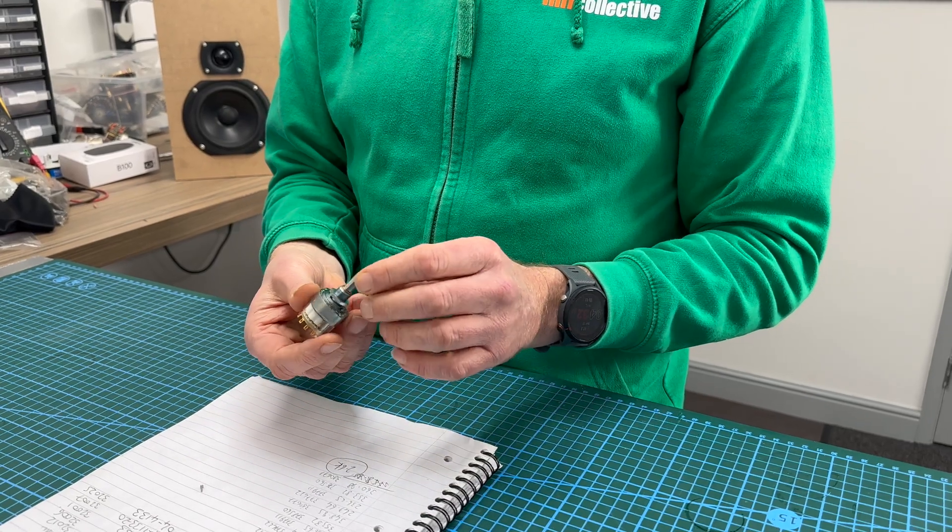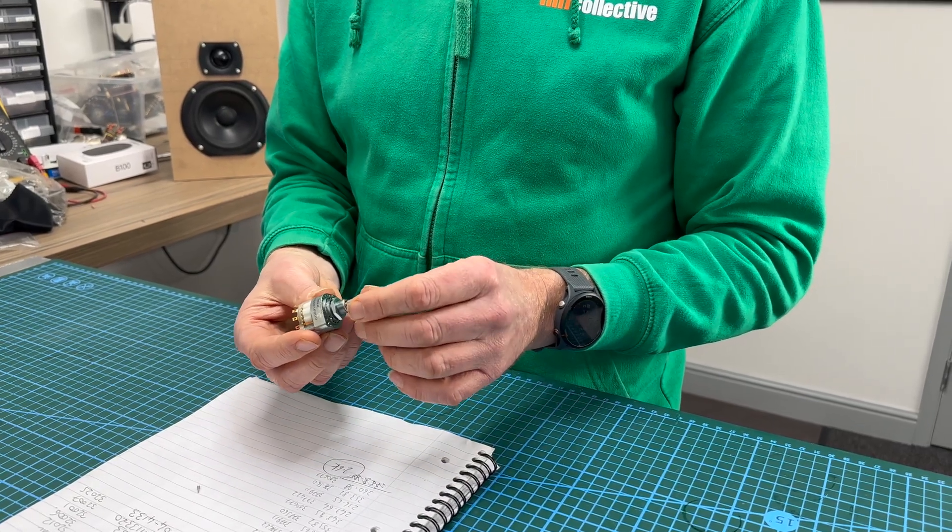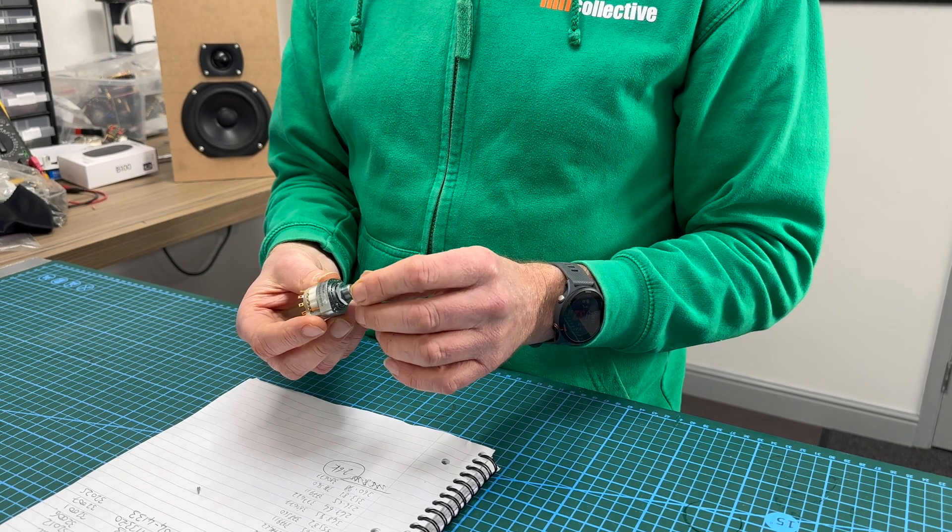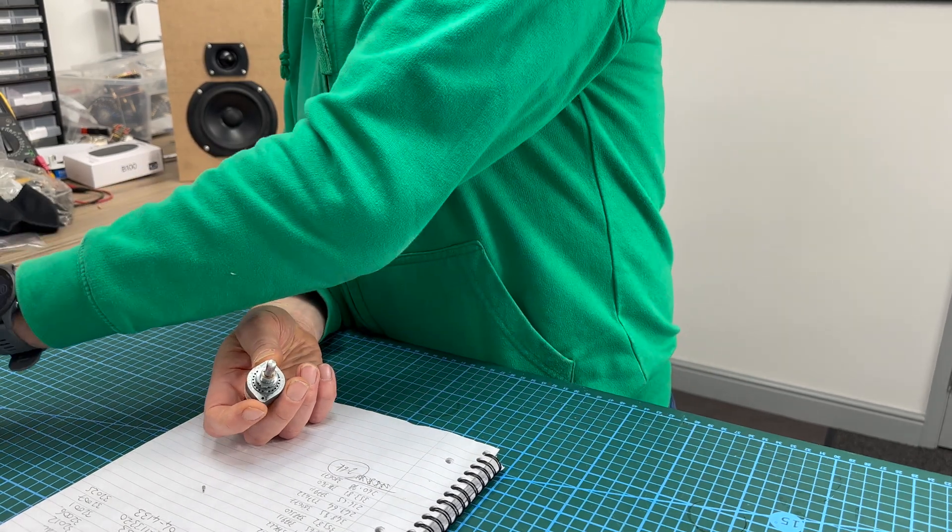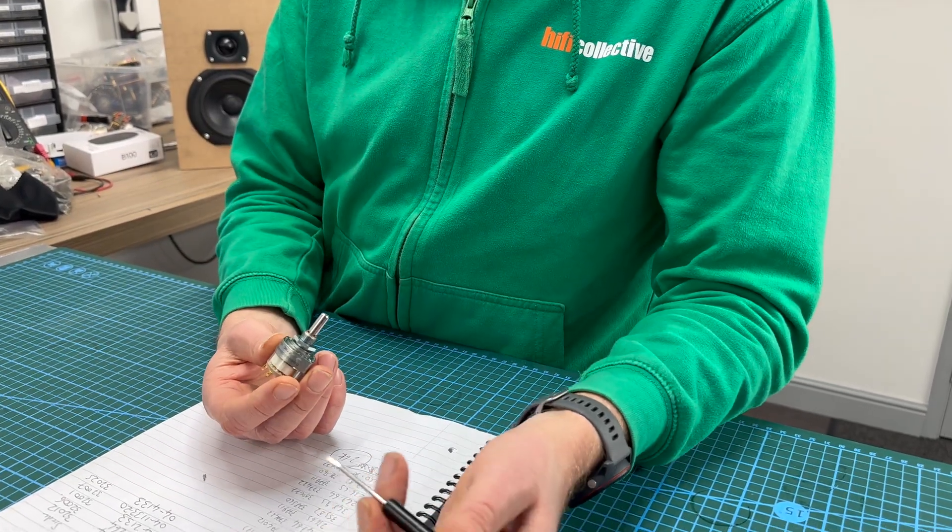So here we have the 04-1264 which is a two pole six way, so we want to make this a two pole four way.